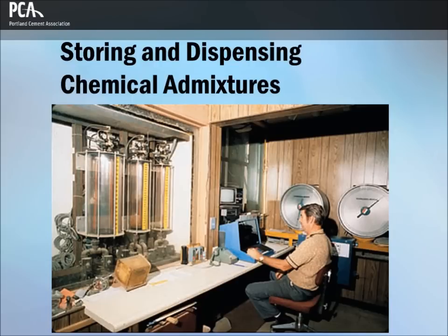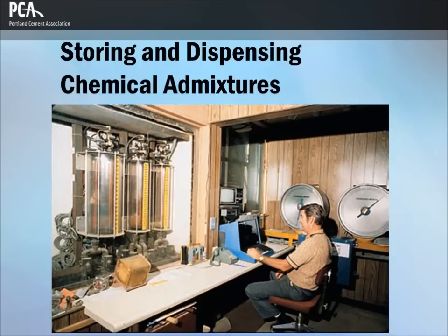Liquid admixtures can be stored in barrels or bulk tankers. Powdered admixtures can be placed in special storage bins and some are available in pre-measured plastic bags. Admixtures added to a truck mixer at the job site are often in plastic bags. Most liquid chemical admixtures should not be allowed to freeze and should be stored in heated environments. Powdered admixtures are usually less sensitive to temperature restrictions but may be sensitive to moisture. Liquid chemical admixtures are usually dispensed individually in the batch water by volumetric means, while liquid and powdered admixtures can be measured by mass.